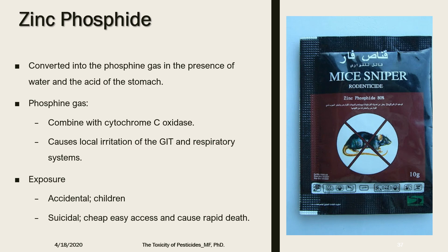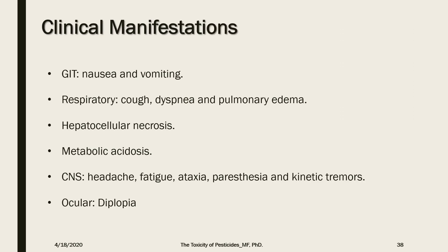Clinical symptoms of zinc phosphide poisoning include circulatory collapse, hypotension, shock, myocarditis, pericarditis, acute pulmonary edema, and congestive heart failure. Exposure may happen accidentally or through suicide, as it is easily obtained from pharmacies and local stores, and it causes rapid death — the mortality rate is around 37 to 100 percent. Most common clinical signs include nausea, vomiting, abdominal and chest discomfort, profound hypotension, severe metabolic acidosis, and acute renal failure.